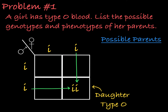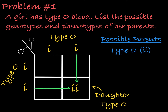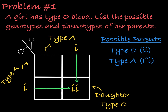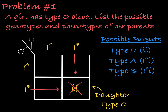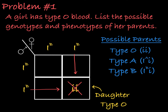They could have another little i, making them type O as well. They could have the ia allele making them type A, or they could have the ib allele making them type B. The only genotypes this girl's parents cannot have are the iaib genotype, homozygous ia, and homozygous ib, as that would mean they could not pass on the little i allele.